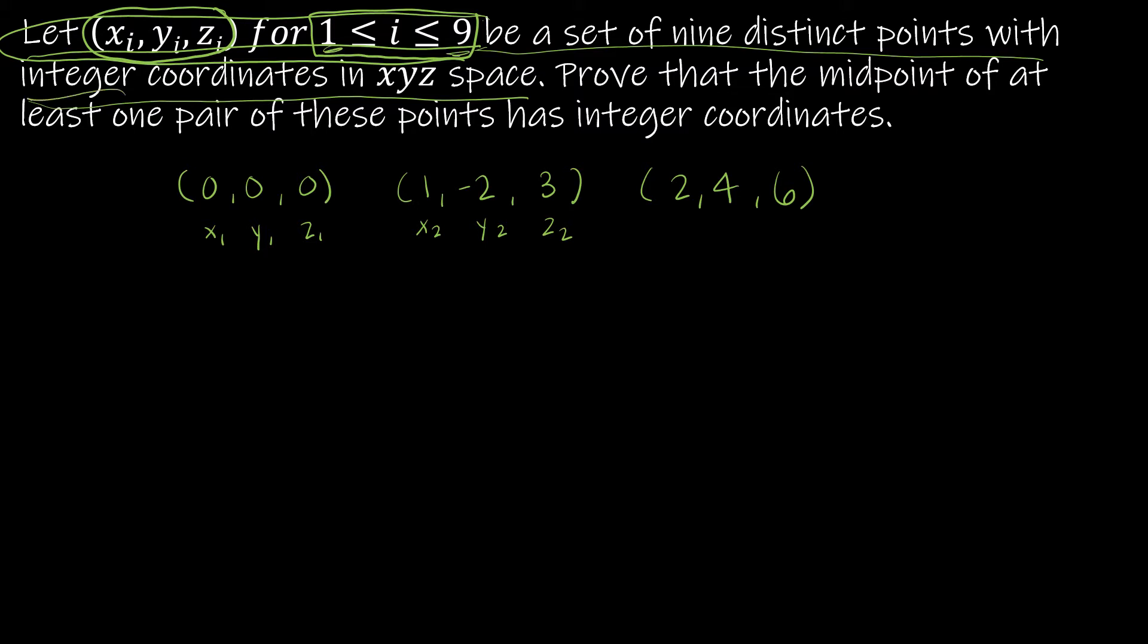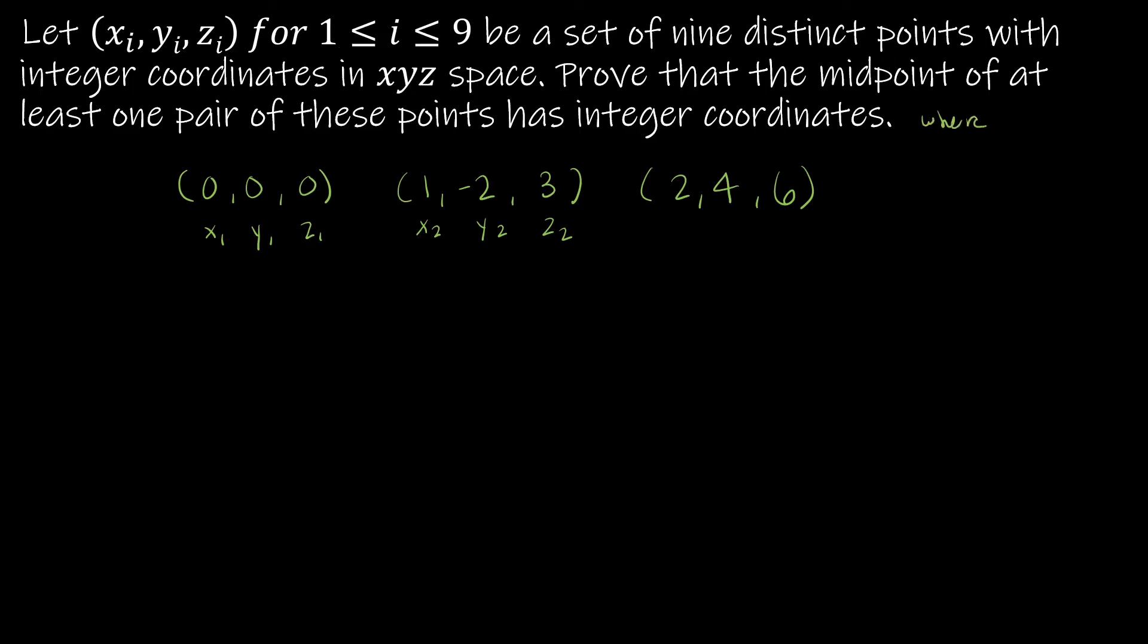We have nine distinct points. That's why it goes from one to nine. And they're integer coordinates in xyz space. They might have written it like that, or they might have said, where x_i, y_i, z_i are integers.